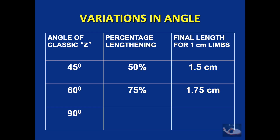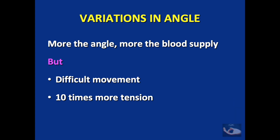If you mark an angle of 90 degrees, you would get an increase of 100 percent — that is, a 1-centimeter scar would now become 2 centimeters. This would be great for releasing contractures. But we must remember that the bigger the angle, the more difficult it is for the flaps to move. More angle means more lengthening and more blood supply, but movement is very difficult because of the wide base, and there will be 10 times more tension in the suture line.